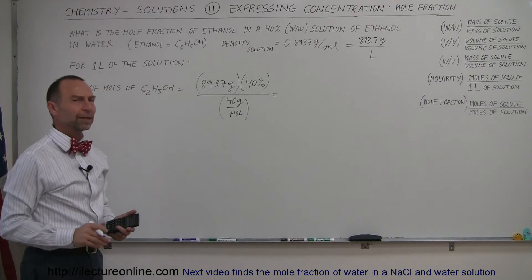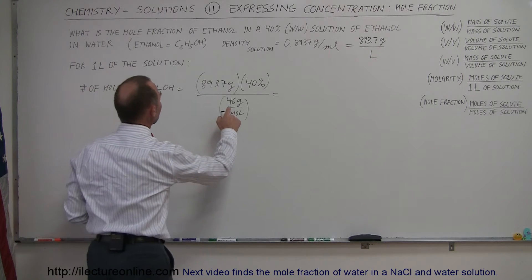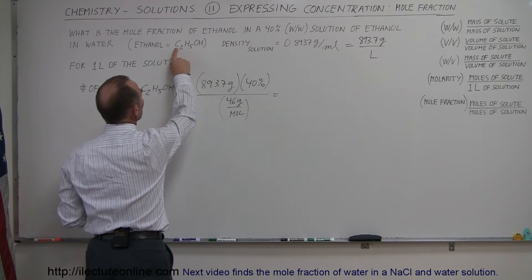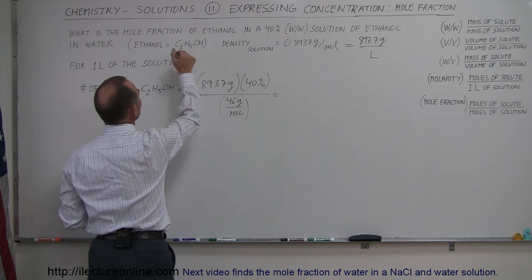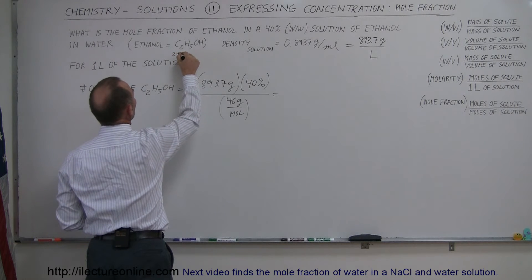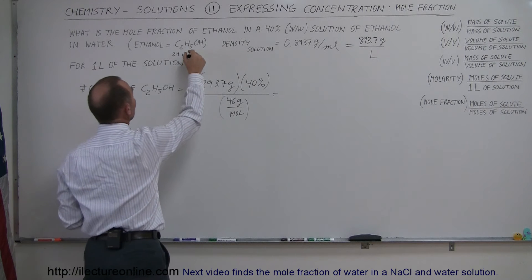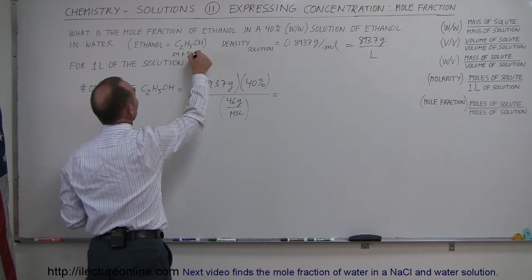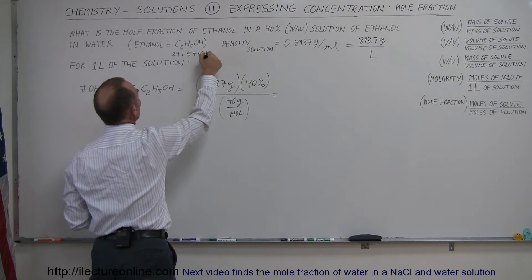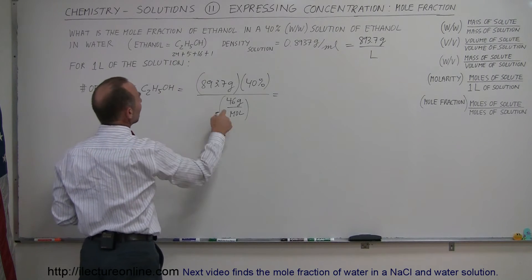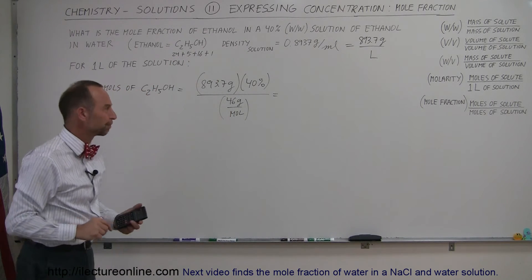If you're wondering where I came up with the 46, just add up the masses. Carbon is 12 grams per mole, we have two of them, so that would be 24 grams, plus 5 grams for hydrogen — 1 gram each times 5, that would be plus 5. Oxygen is 16 grams per mole, and then we have one more gram for that hydrogen, so that gives us 46 altogether.